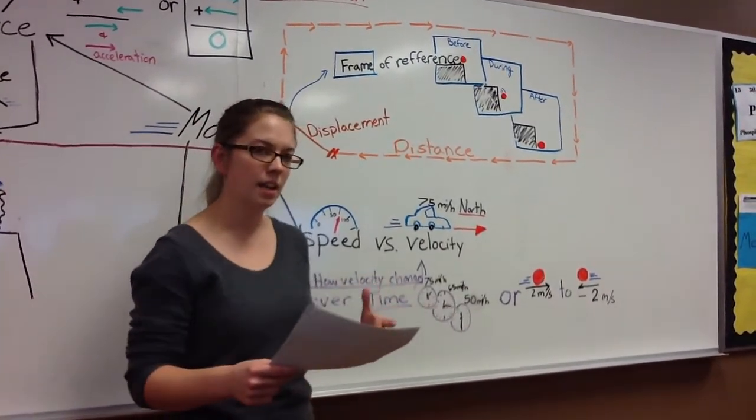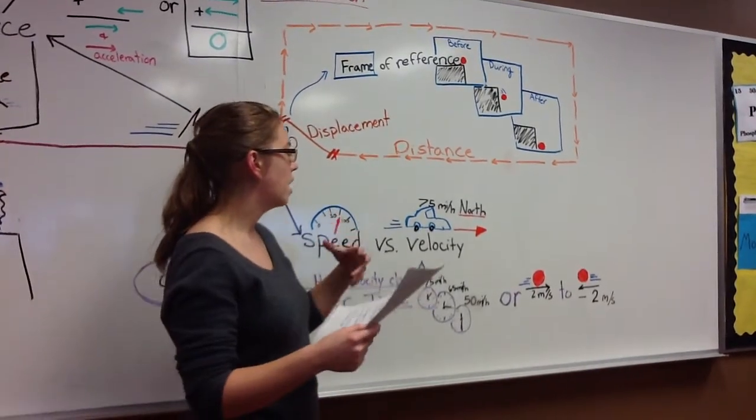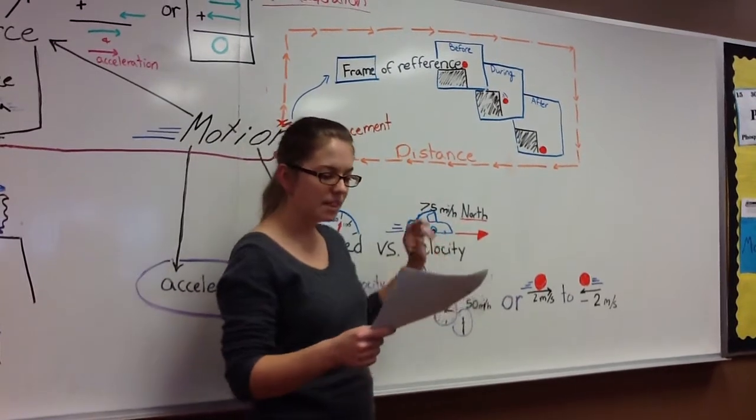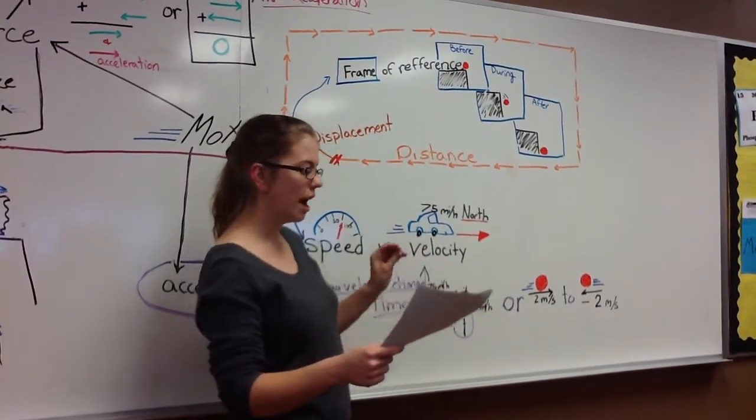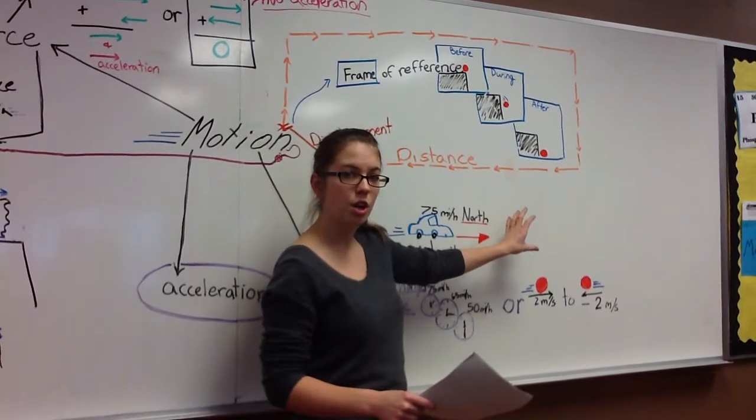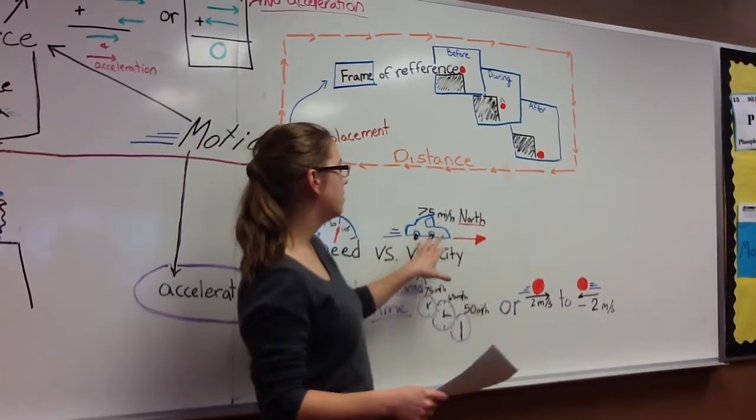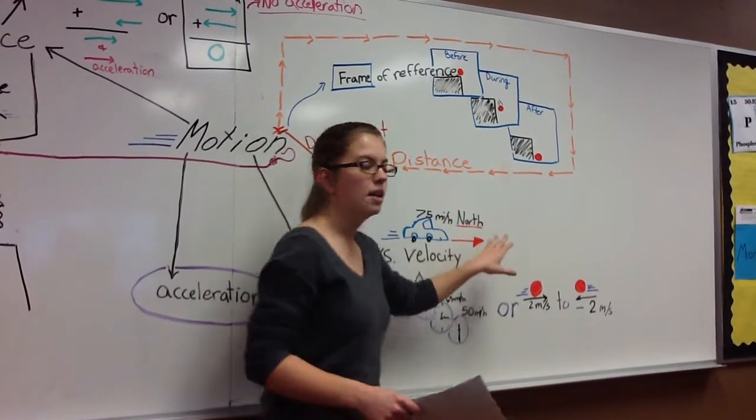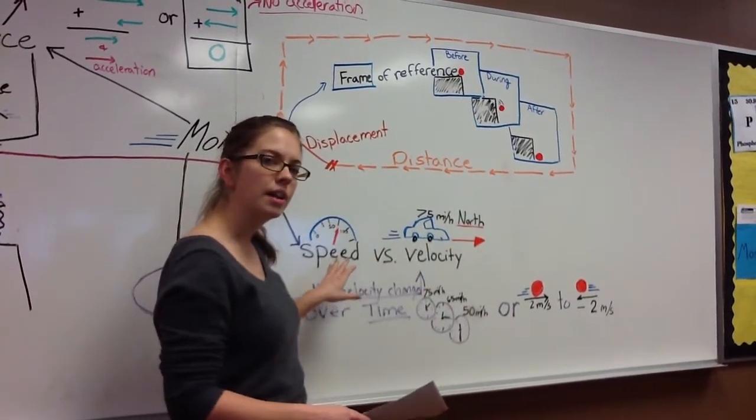Now, velocity also involves a speed or a rate, such as miles per hour. But the difference is that we need to also have a specific direction. So, if you're going 75 miles per hour north, that's your velocity. 75 miles per hour is your speed.